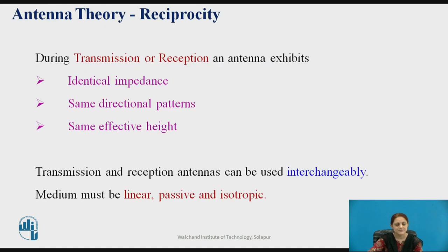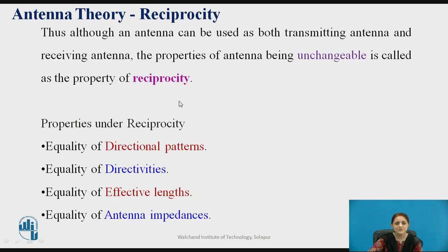Antenna theory follows the reciprocity theorem. During transmission or reception, an antenna should exhibit identical impedance, the same directional pattern, and the same effective height. Thus a transmitting and receiving antenna can be used interchangeably because all these characteristics are the same, provided the medium is linear, passive, and isotropic. Although the antenna can be used as both transmitting and receiving antenna, its properties remain unchanged — this is known as the reciprocity theorem. These properties include equality in directional patterns, equality in directivities, effective lengths, and equality in antenna impedances.